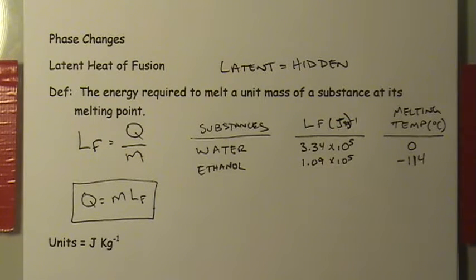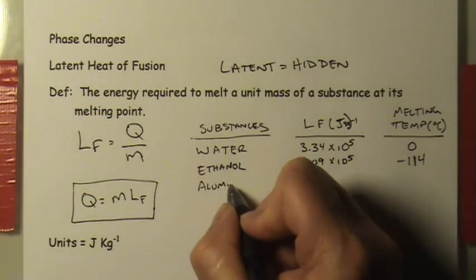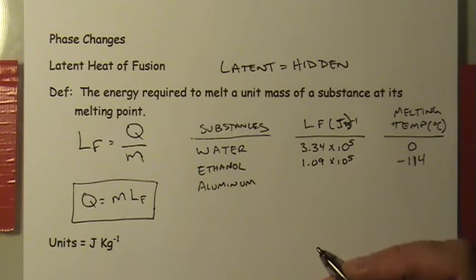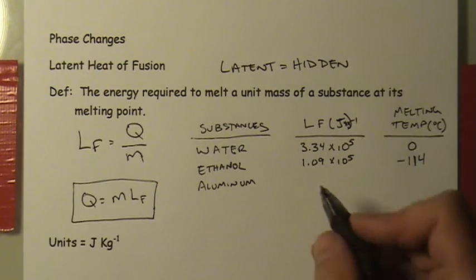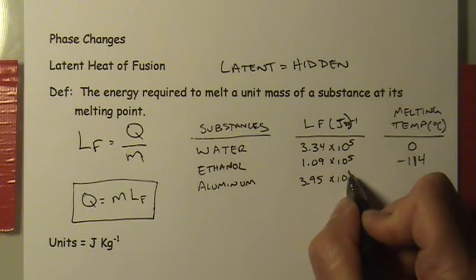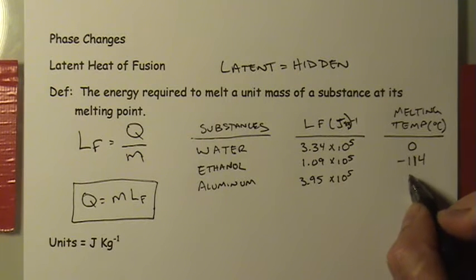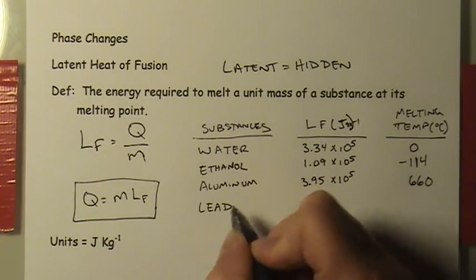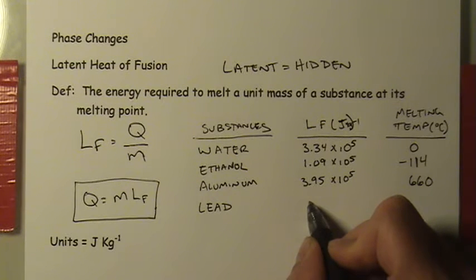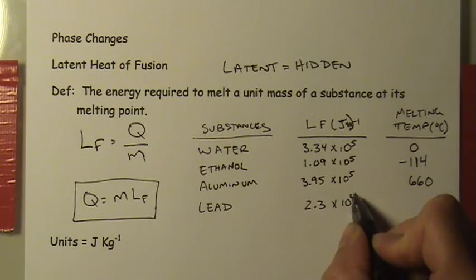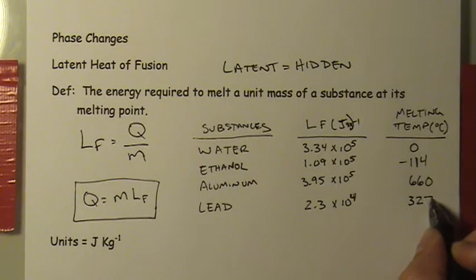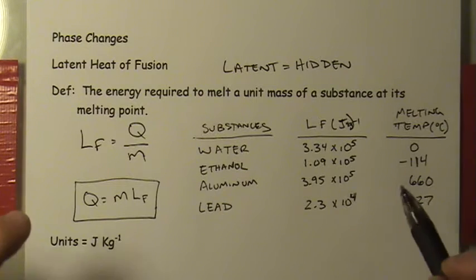Looking at metals, aluminum has a latent heat of fusion actually similar to water — 3.95 × 10^5 joules per kilogram at its melting temperature. However, that melting point is 660°C, much hotter. Lead is a metal that's easier to melt: it requires only 2.3 × 10^4, or about 23,000 joules per kilogram, and melts at only 327°C.